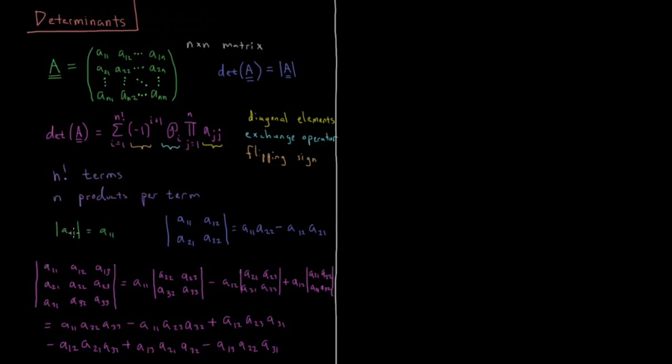So the determinant of a one by one matrix is just that element itself, it's just A11.